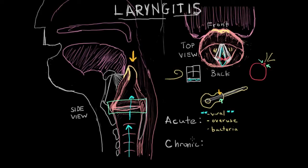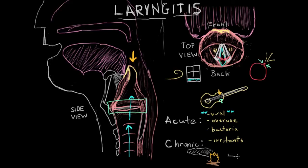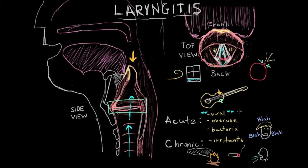Chronic laryngitis is usually due to some sort of chemical, overuse, or irritant. Viral and bacterial illnesses tend to resolve after a little time; however, if a patient has chronic sinus issues or sinusitis, this can also lead to chronic laryngitis. Chronic irritants include smoke, fumes, second-hand smoke exposure, and repeated vocal strain from singing or talking a lot. Reflux disease or vomiting can also cause chronic laryngitis. Avoiding irritants and maintaining proper hygiene to avoid viral — or rarely bacterial — illnesses is the best prevention.